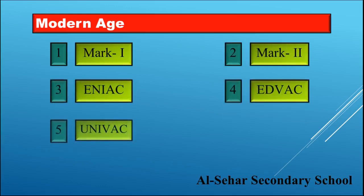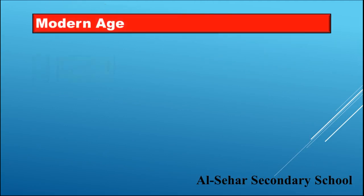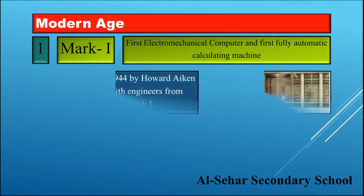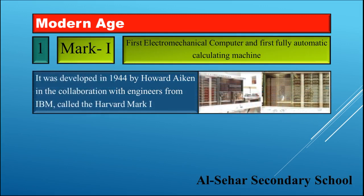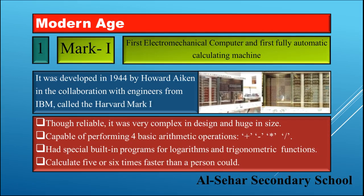Let's talk about the inventions: Mark One, Mark Two, ENIAC, EDVAC, UNIVAC, and IBM computers. Mark One was the first electromechanical computer and first fully automatic calculating machine. It was developed in 1944 by Howard Aiken in collaboration with engineers from IBM, called the Harvard Mark One. Though reliable, it was very complex in design and huge in size.